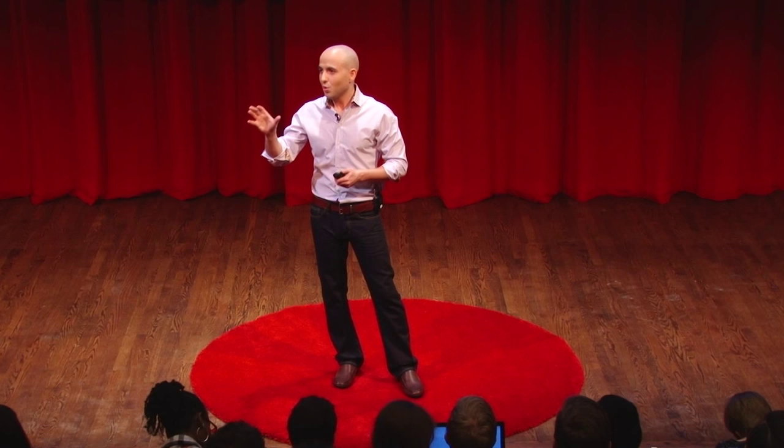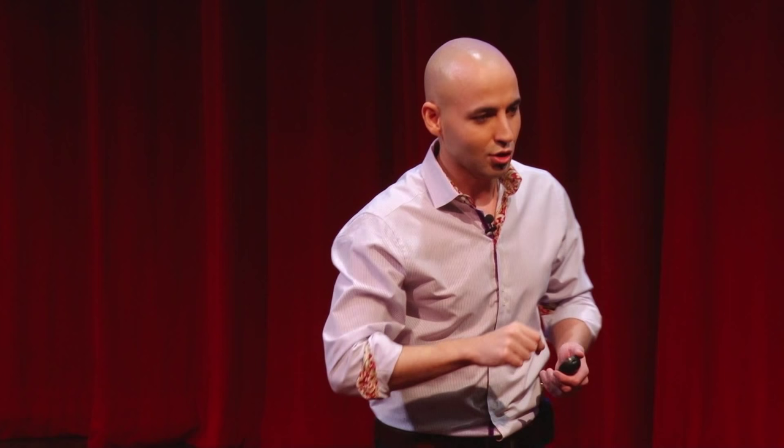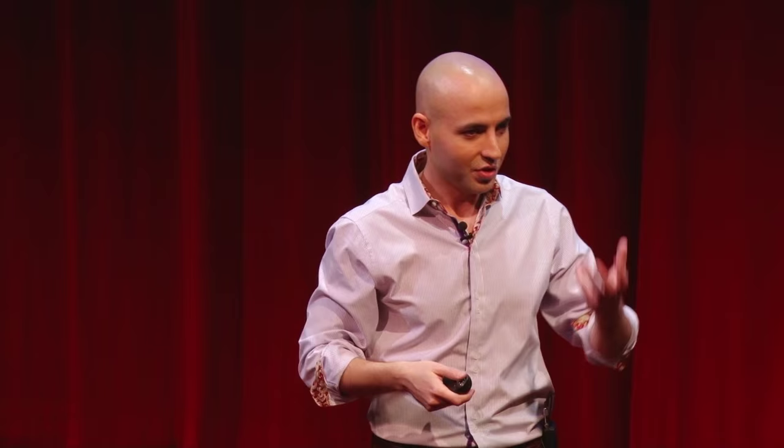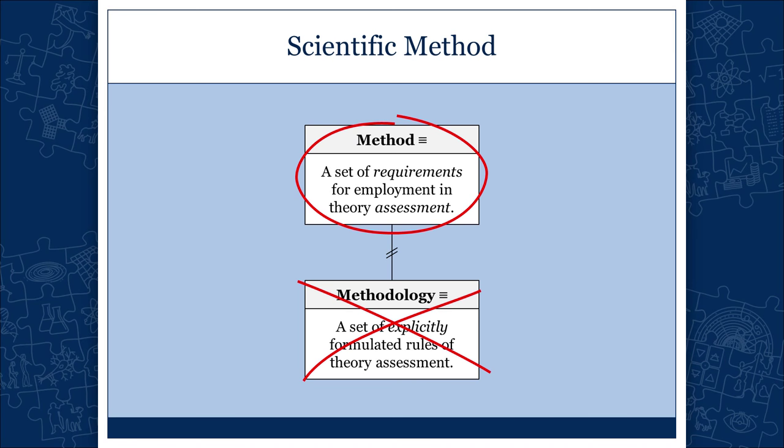Method is what scientists actually do. Albert Einstein once said, very famously: if you really want to understand what science is all about, don't listen to what scientists say they do — look at what they actually do. Basically, he was asking us not to focus on methodology but on the method, on the actual expectations. They are never on the surface; they are often very difficult to unearth. But that's what we have to understand — it's not the methodology that does the job, it's the method.